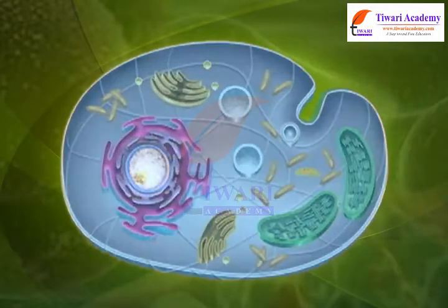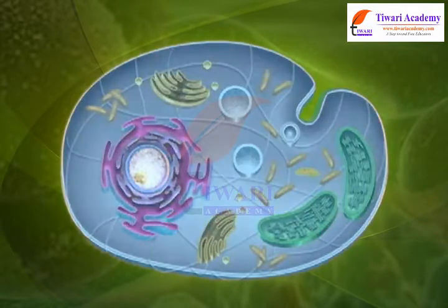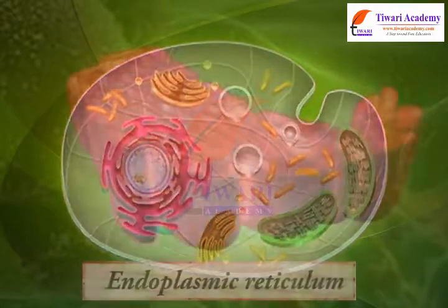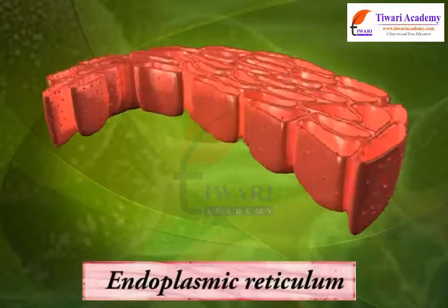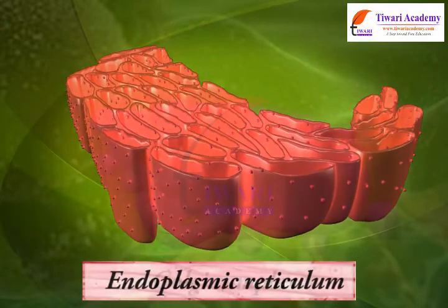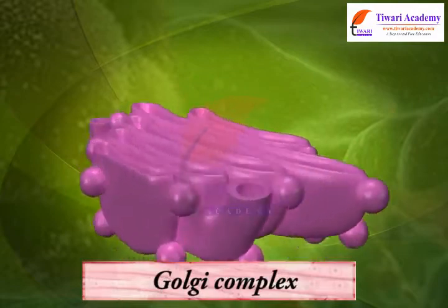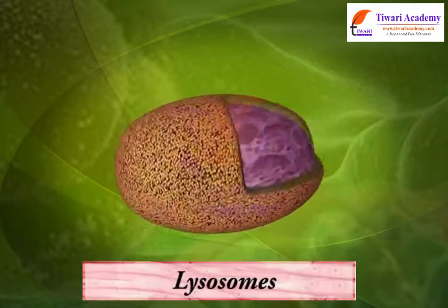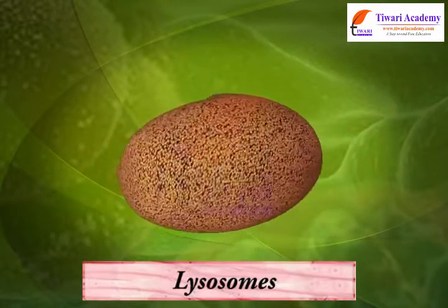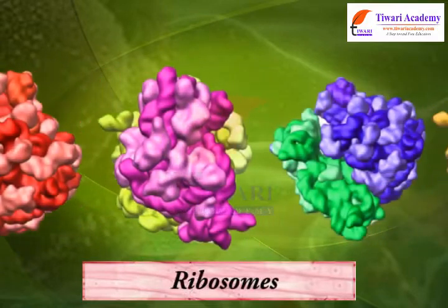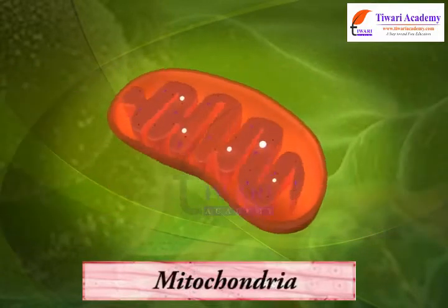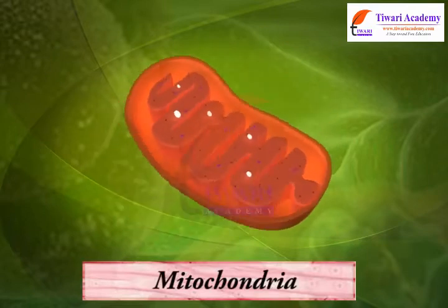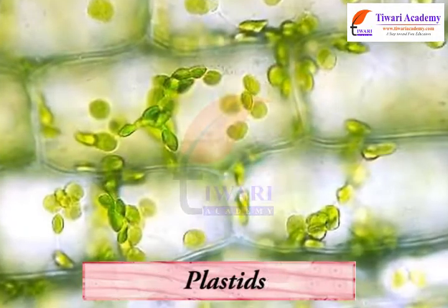Cytoplasm is the part of the cell that surrounds the nucleus. It is the portion containing the various organelles that perform different functions for the cell. These organelles are the endoplasmic reticulum (ER), Golgi complex, Lysosomes, Microbodies, Ribosomes, Mitochondria, and Plastids.